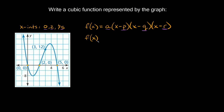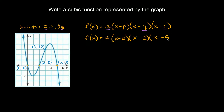So we're going to have f(x) = a, and in the first set of parentheses we put our first x-intercept which is zero, so we write x minus zero. Then we have x minus two — when you plug in your x-intercepts you have to change the sign, so since we have a positive two we write it as minus two. Same thing with the last one: positive five becomes x minus five.